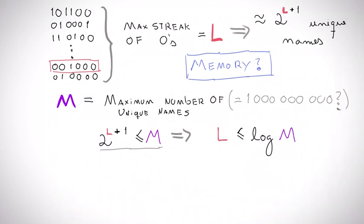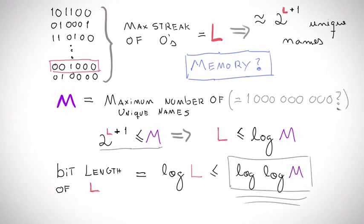And to store any given number in the computer, such as log M, we need at most its length in binary, which is also given by log. So to store the value that cannot be bigger than log M, we need only around log log M bits.